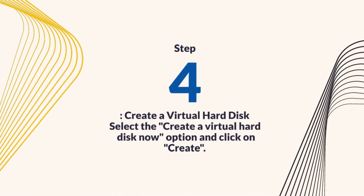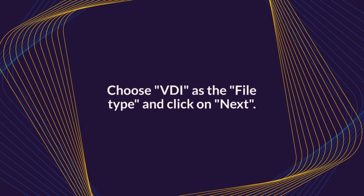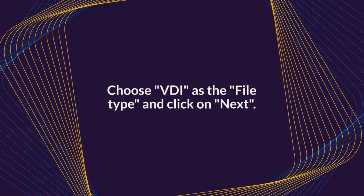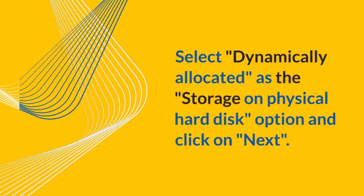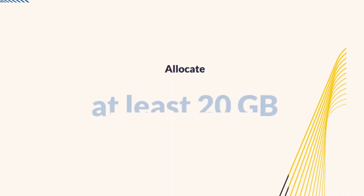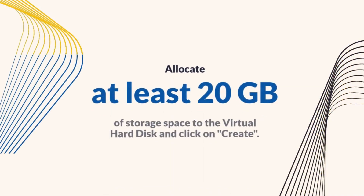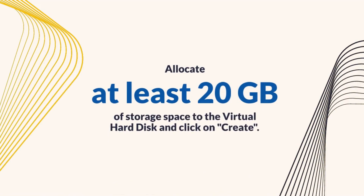Step 4: Create a virtual hard disk. Select the "Create a virtual hard disk now" option and click on Create. Choose VDI as the file type and click on Next. Select Dynamically Allocated as the Storage on physical hard disk option and click on Next. Allocate at least 20GB of storage space to the virtual hard disk and click on Create.